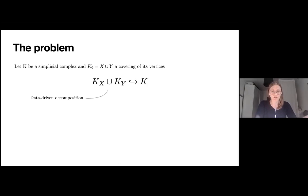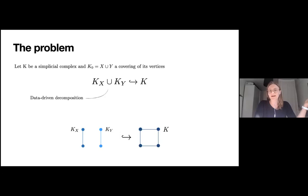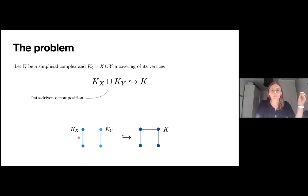For example, take the simplicial complex K, which is the square on the right of the picture, and take the decomposition of its vertices given by the two vertices on the left and the two vertices on the right. When restricting K to these subsets of vertices, we get two contractible connected components. In general, the inclusion of a data-driven decomposition of a simplicial complex into the simplicial complex itself not only fails to be an equality, but it also fails to be a weak equivalence in general, as in this example where the two simplicial complexes have different homologies.